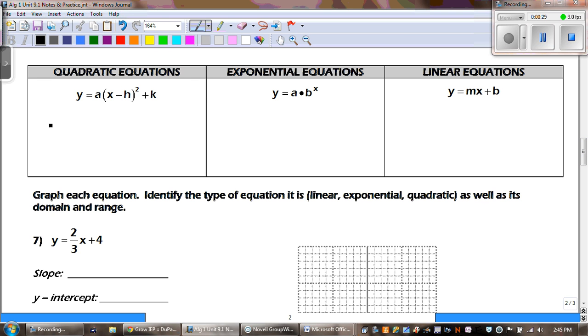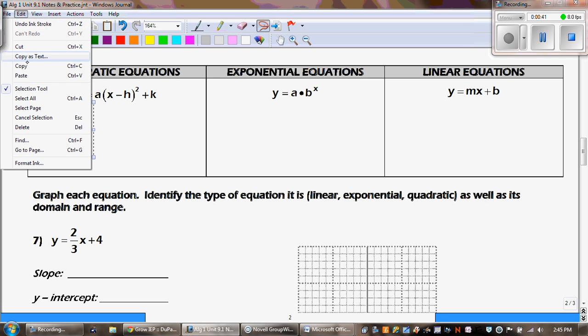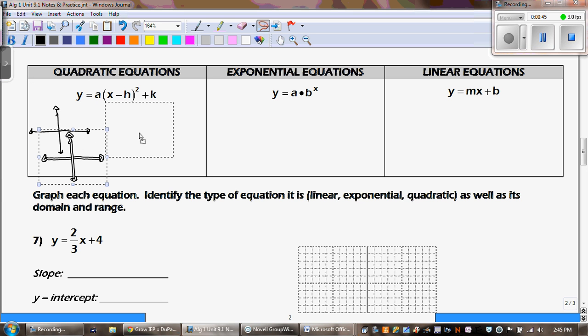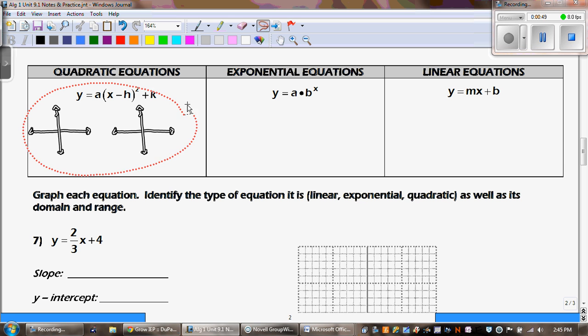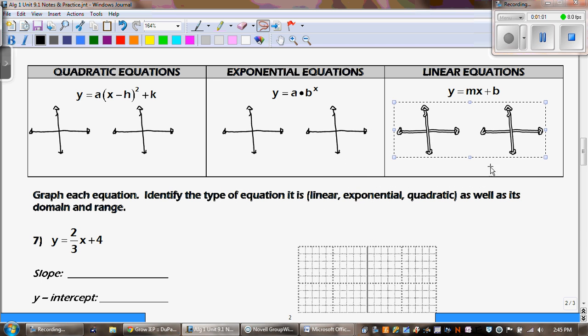So before we get started with the bottom part, let's review these three different types of equations that we've already talked about in class. First one is quadratic equations. And if you notice, that graph is in standard form. Quadratic graphs were in the shape of a parabola. If it was rising, it looked like that. And if it was falling, the parabola faced down. So we either had it facing up or facing down.